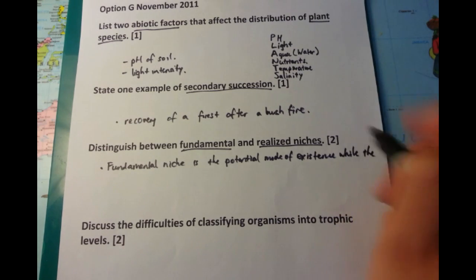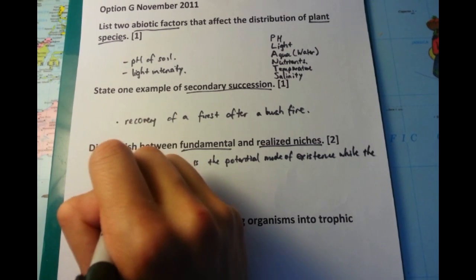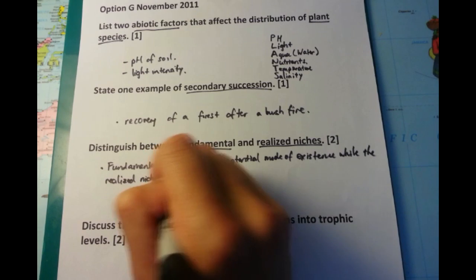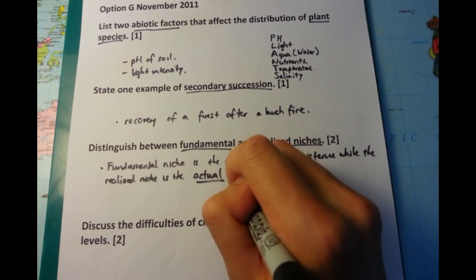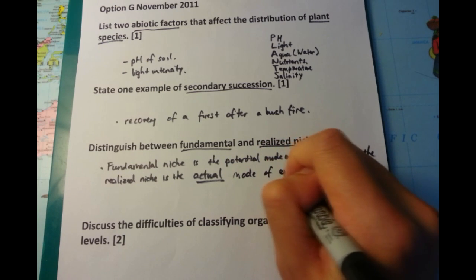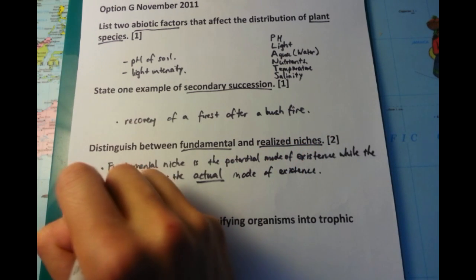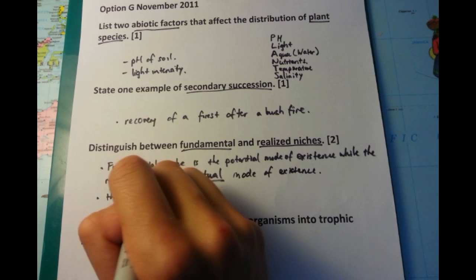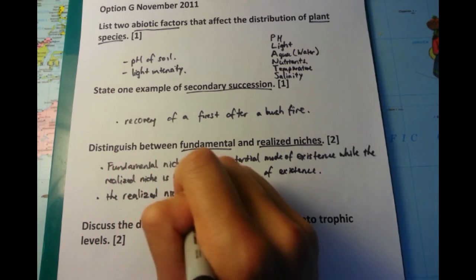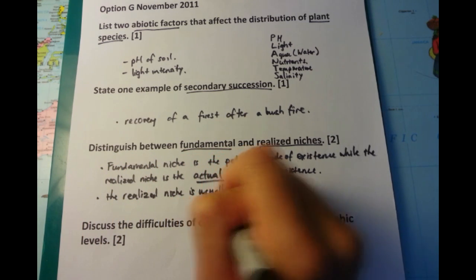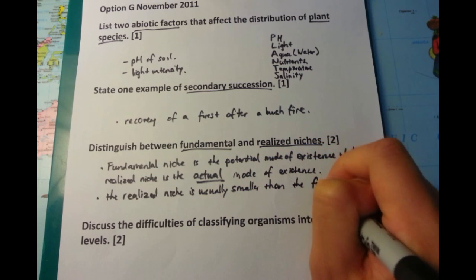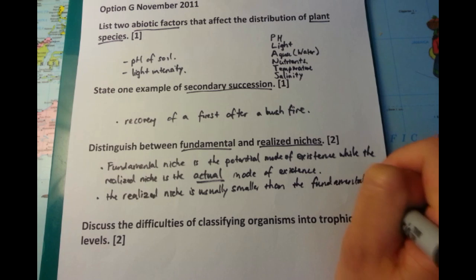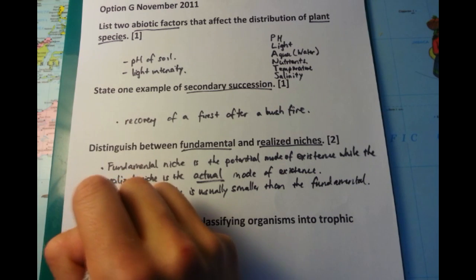So let's define it first. The fundamental niche is the potential mode of existence, while the realized niche is the actual mode of existence. And typically, the realized niche is a subset or somewhat smaller than the fundamental niche. That's my second point. And the third point is to explain why it is smaller. And the reason why is that you have aspects such as competition, as well as predation. And this can cause the realized niche to be smaller than the fundamental niche.